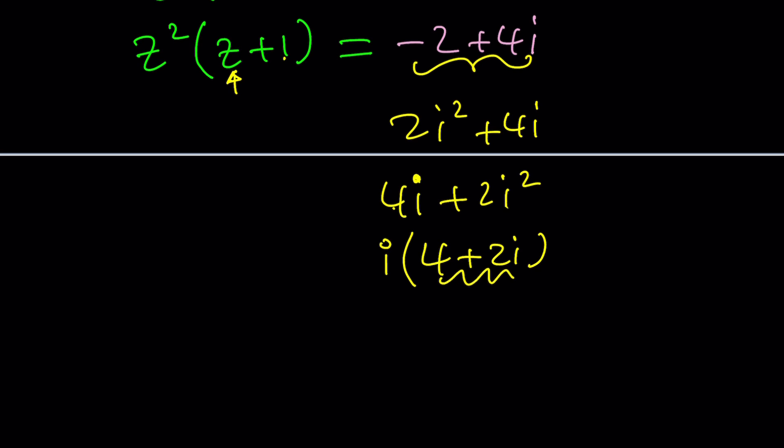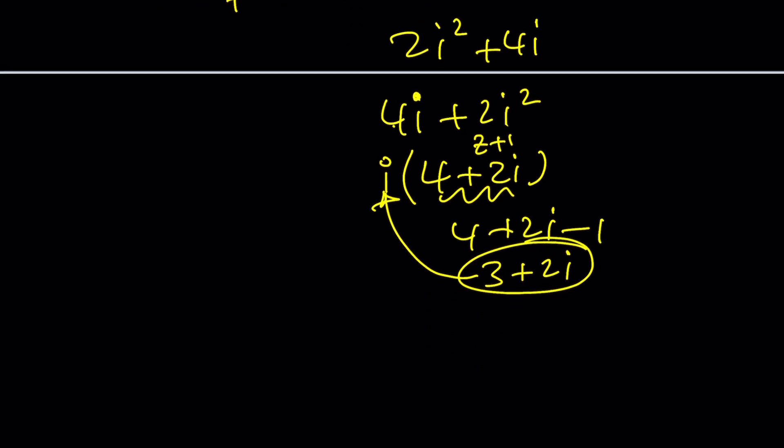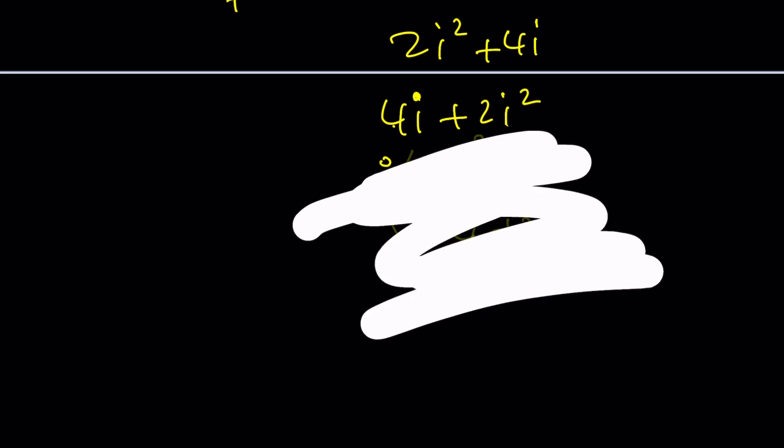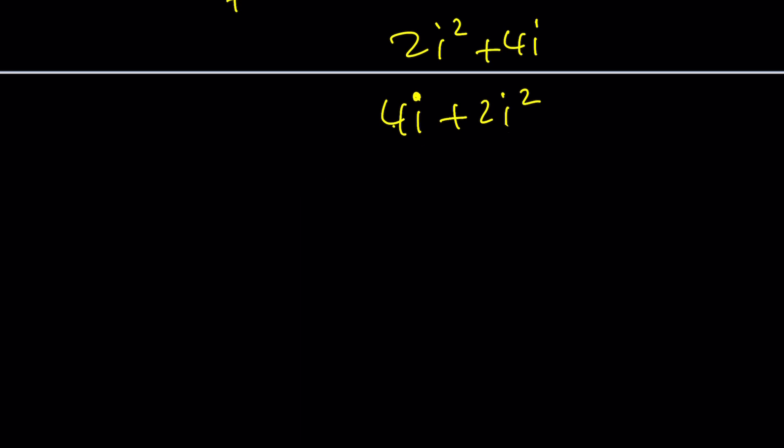But if I take out an i, I'll be getting four plus two i. Now think about it. If I square this after subtracting one, of course, like this is z plus one, remember? This is z plus one. If I subtract one from it, it's going to be three plus two i, but its square is not going to be i. But if I do this, things will be different. Let's erase this. And I'm going to write it as, I'll factor out a two i, because that's possible. Two plus i. There you go.